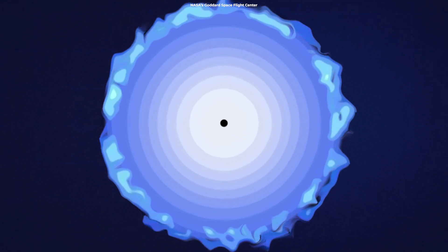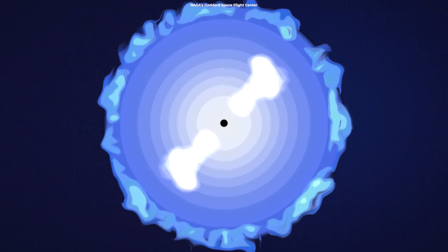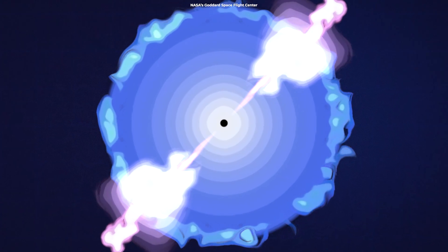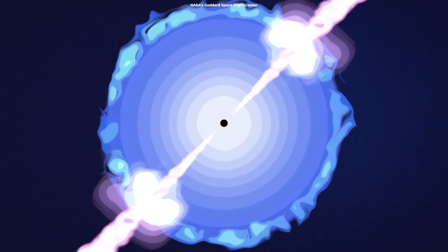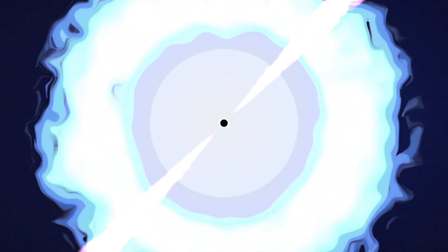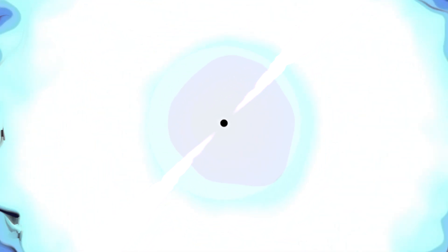These black holes emit a jet of matter and electromagnetic radiation that moves at close to the speed of light. In moments after the black hole starts emitting this high-energy stream of matter and radiation, the jet produces a burst of gamma rays that can last for minutes.